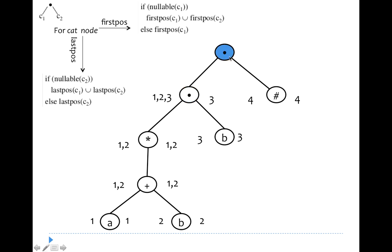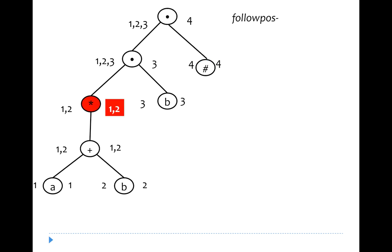For the second concatenation node with children c1 (the previous concat node) and c2 (leaf node 4): since c1 is not nullable, firstpos = firstpos(c1) = {1, 2, 3}. Since c2 is not nullable, lastpos = lastpos(c2) = {4}. We have now computed first position and last position of all nodes, and will next compute follow positions.